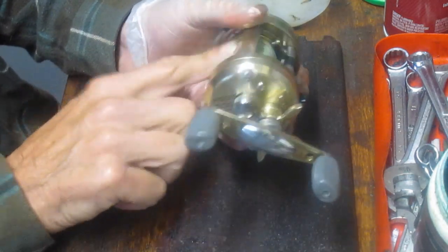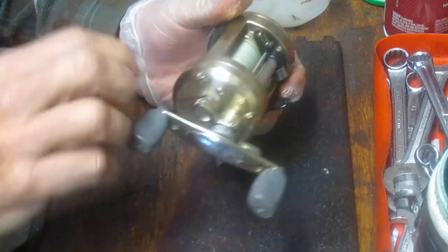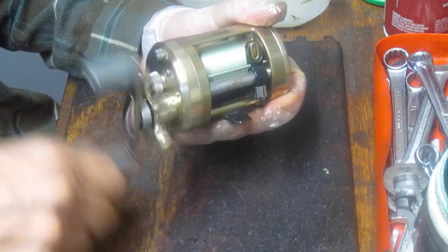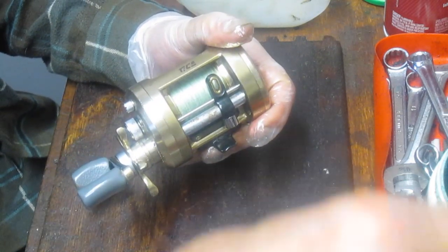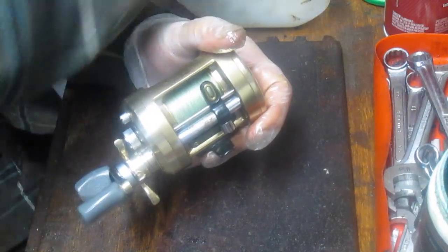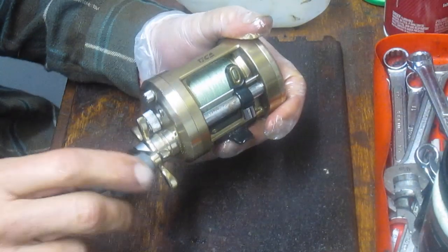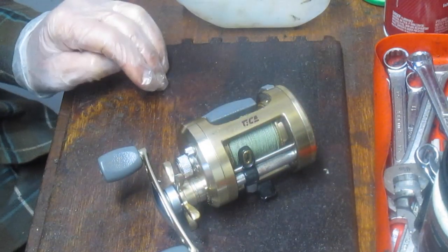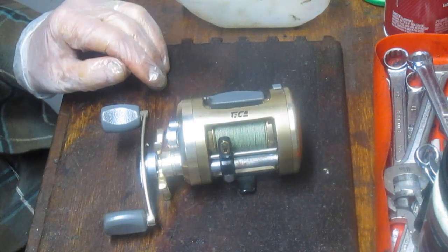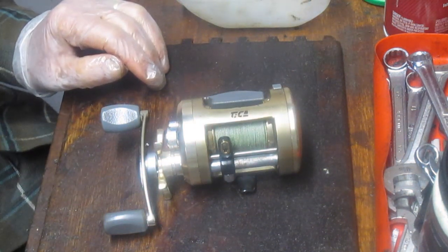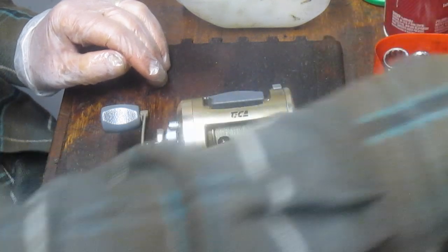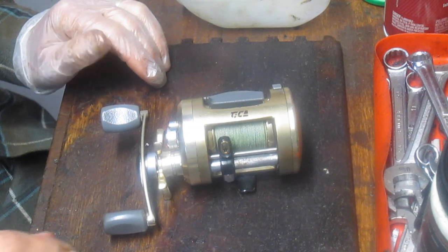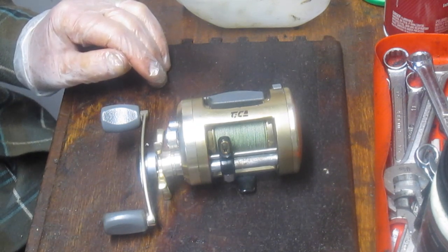That's it. That's the Tica Pisces 200. It's a well made reel. If you happen to find one around either on eBay or in your yard sales or your flea markets or whatever, I would recommend picking one up. Like I said, I'm a fan of the Tica reels. I think they're well made and they suit my environment very well. So with that, I hope you've enjoyed watching this one. If you'd like to see more, please subscribe. And I wish you good fishing. This is Dennis with Second Chance Tackle. Thank you for watching.